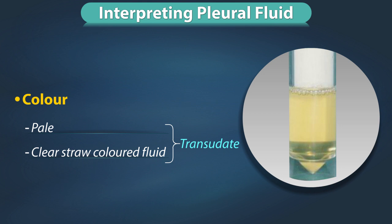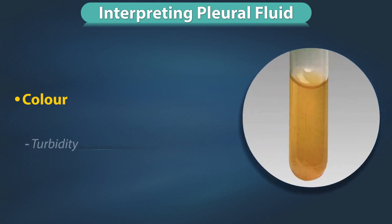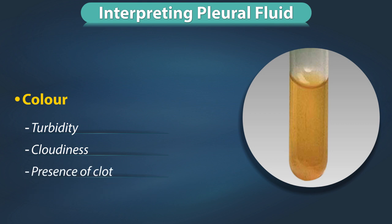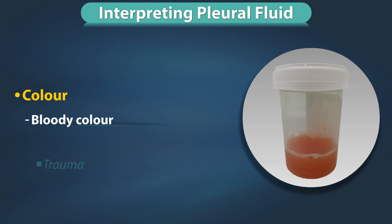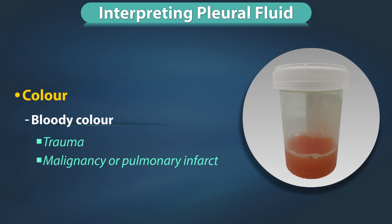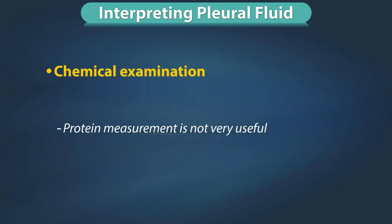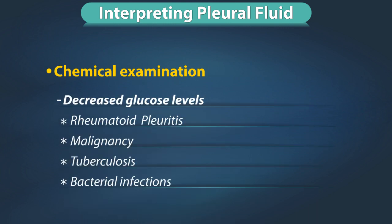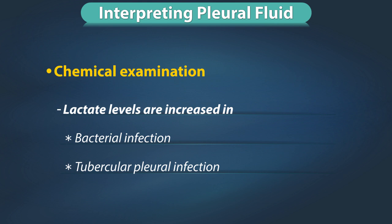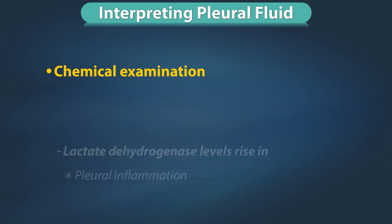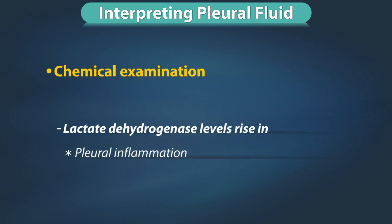Interpreting pleural fluid: pale, clear, straw-colored fluid is transudative, while turbid, cloudy fluid with presence of clot is exudative. A reddish color is seen in trauma, malignancy, or pulmonary infarct. Chemical examination: protein measurement is not very useful. Decreased glucose levels are seen in rheumatoid pleuritis and some cases of malignancy, tuberculosis, and bacterial infections.